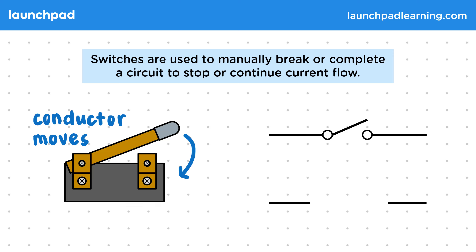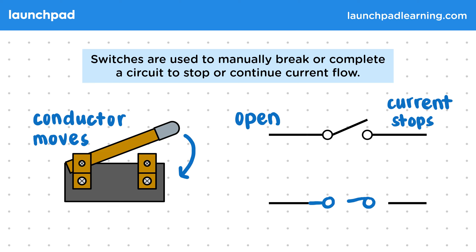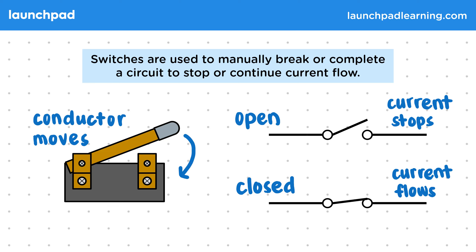This can also be used to specifically represent a switch that is open — in other words, the switch is stopping the current. Then by drawing the line connected to both circles, we show that the switch is closed and that a current flows through the circuit. This is often used when explaining how currents in circuits change as we open or close switches.